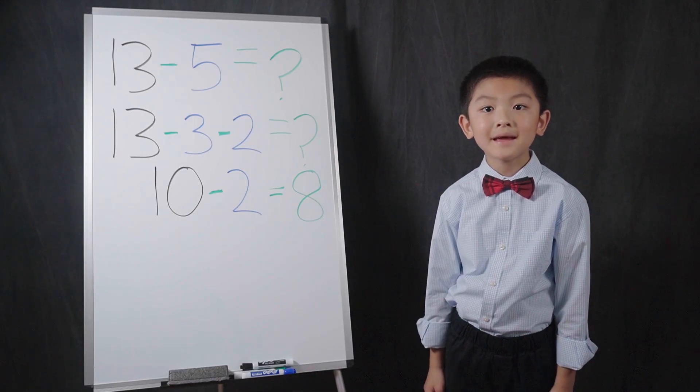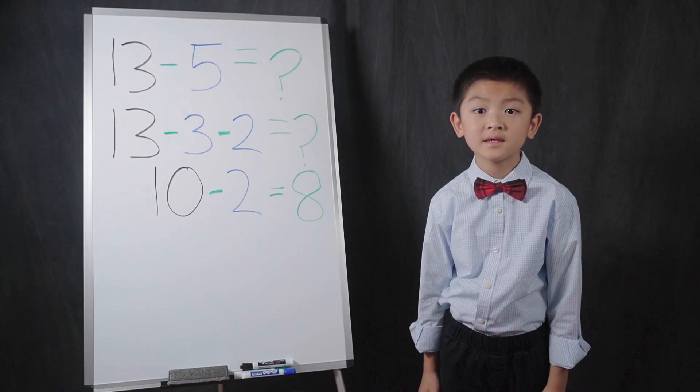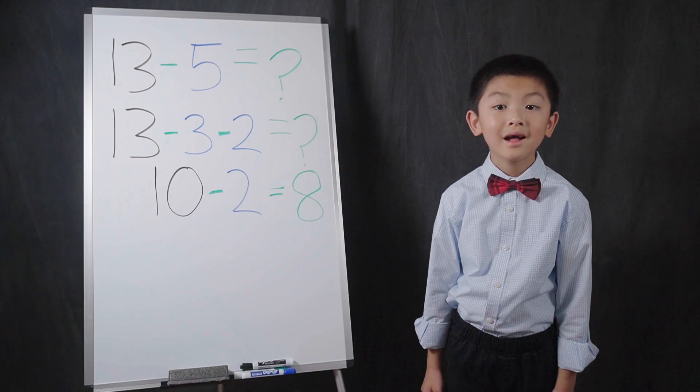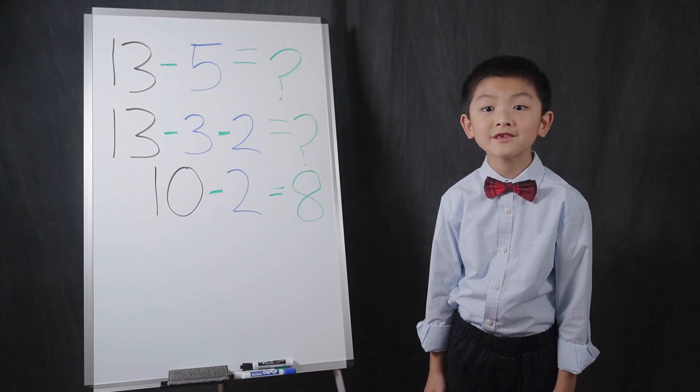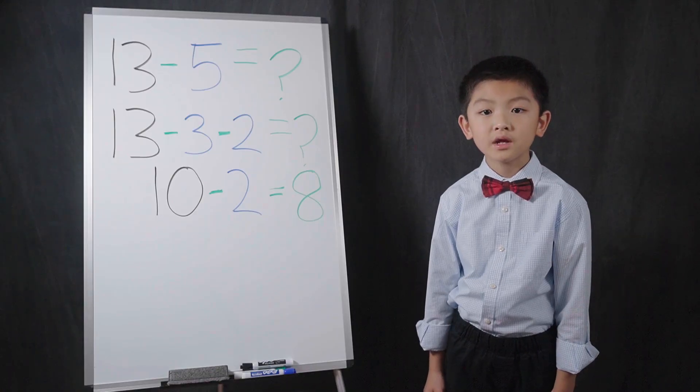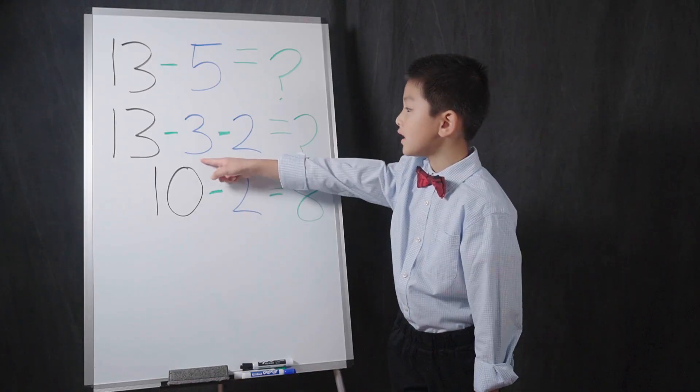The make it 10 method can also be applied to subtraction. So, here, I want to break up the 5 into 2 numbers, so that the left side becomes 10. I break up the 5 into 3 and 2.